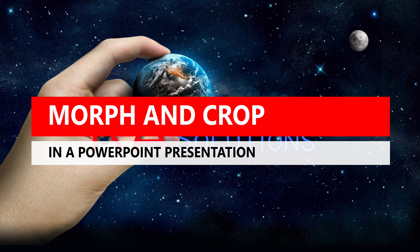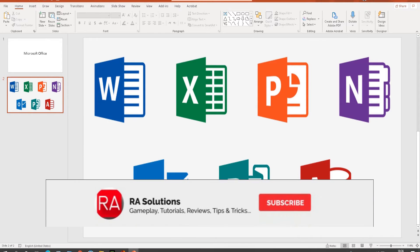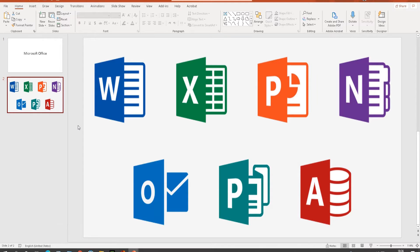To give you a bit of background, I've got a PowerPoint presentation open — it's going to be on Microsoft Office. I want to talk about the separate software packages within Microsoft Office: Word, Excel, PowerPoint, OneNote, Outlook, Publisher, and Access. Normally people would talk about each on one slide or create separate slides. I'm going to do this using a method called morph and crop within Microsoft PowerPoint.